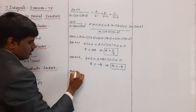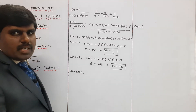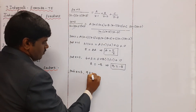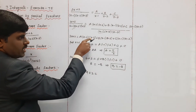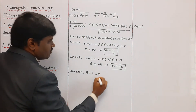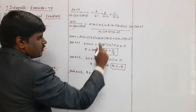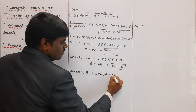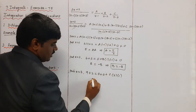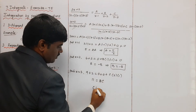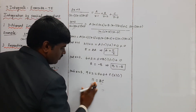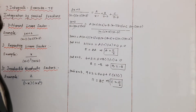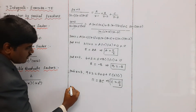Next, substitute x = 3: the left side gives 3(3) + 2 = 11. The A and B terms become zero. So 11 = C(3−1)(3−2) = C(2)(1) = 2C, therefore C = 11/2.